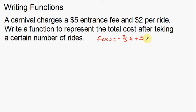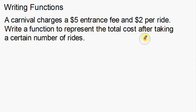So we want to write a function using the fact that the carnival charges a $5 entrance fee and $2 per ride, and we want it to look like standard function notation. That shouldn't be too terribly hard, but the problem is I don't know what variables to use — and that's the thing. When you don't have a lot of direction, you can use whatever you want.